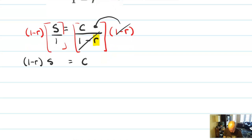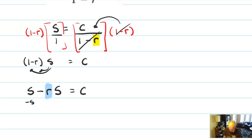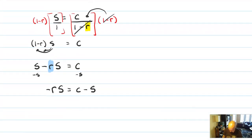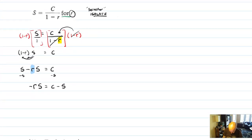Next, let's distribute. s distributes to both terms, so I get s minus rs equals c. I'm continuing with my goal, which is to isolate r. Let's subtract s from both sides, and I should get negative rs equals c minus s.